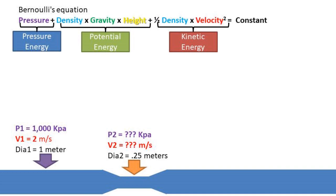We will be using the Bernoulli equation. The Bernoulli equation is used to find out how much energy is in the pipe. There are three portions of the equation: the pressure energy, the potential energy, and the kinetic energy portion.